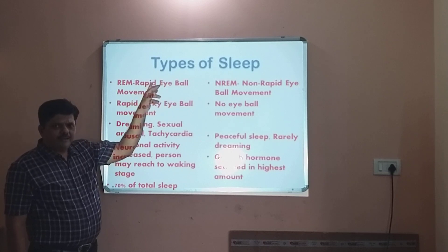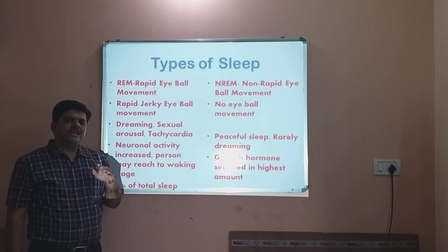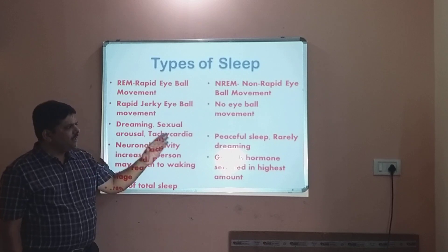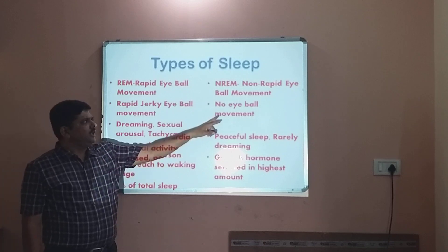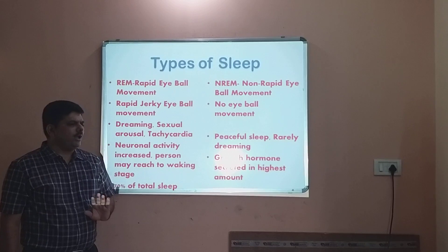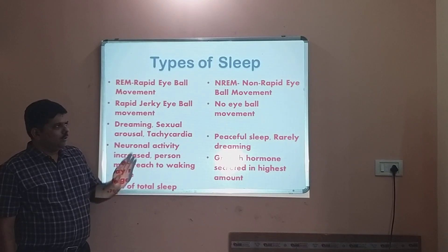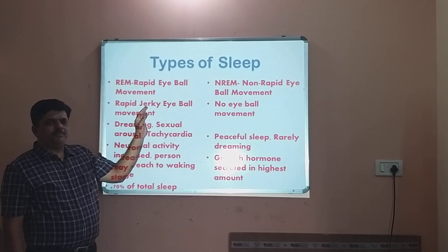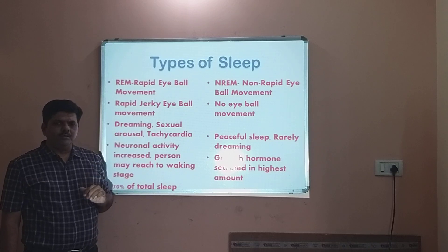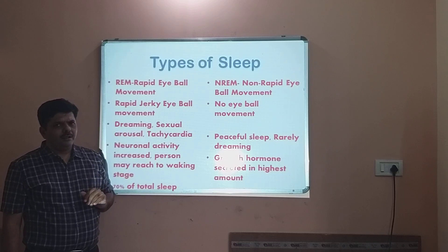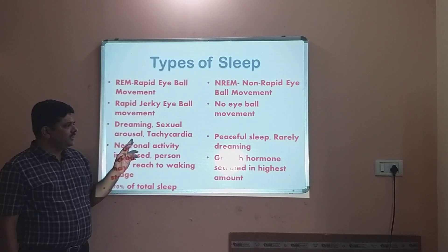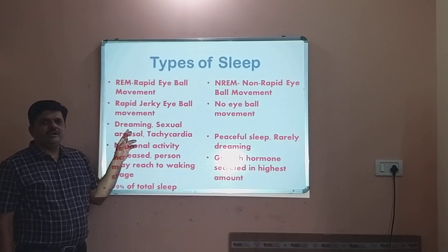In REM sleep, the eyeball is moving and rotating. In NREM sleep, there is no eyeball movement. REM sleep produces rapid jerky eyeball movement, and generally during this sleep there is a dreamy condition.